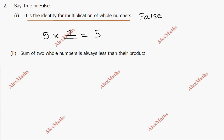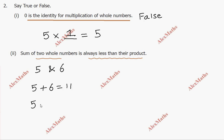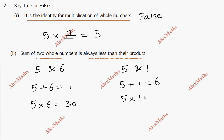Subdivision 2: the sum of 2 whole numbers is always less than their product. Taking example: 5 and 6. Sum: 5 plus 6 is 11. Product: 5 into 6 is 30. Here sum is less than product. But take example with 1: 5 plus 1 is 6, and 5 into 1 is 5. Here sum 6 is greater than product 5. So it is not always true — this statement is false.